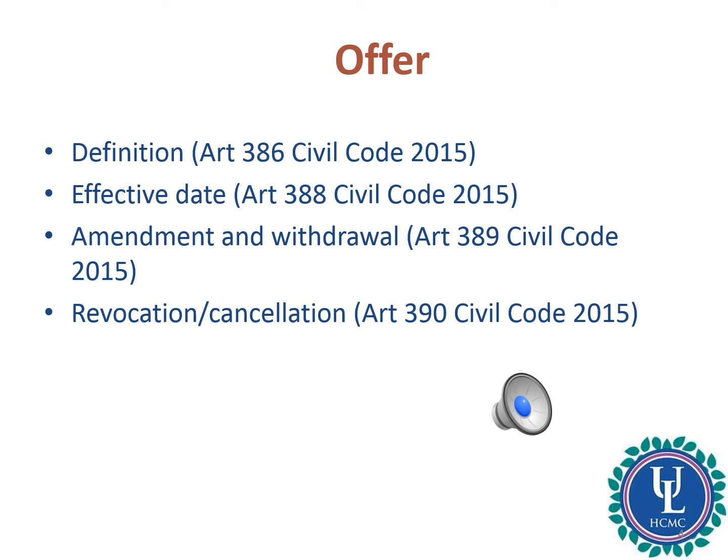Sub-Article 2 of Article 388 of the Civil Code 2015 sets up the rules to determine the effective date of the offer. There are three situations: first, at the time the offer is delivered to the place of residence of the offeree if the offeree is an individual, or delivered to the head office of the offeree if the offeree is a legal entity; second, when the offer is placed into the official information system of the offeree; and third, when the offeree knows about the offer by other means.